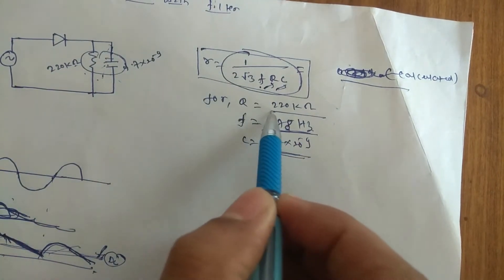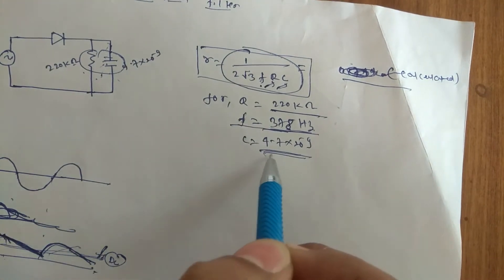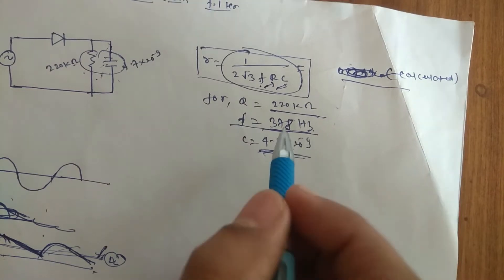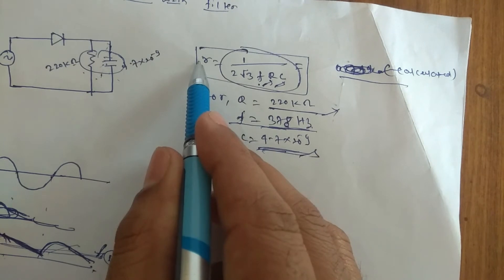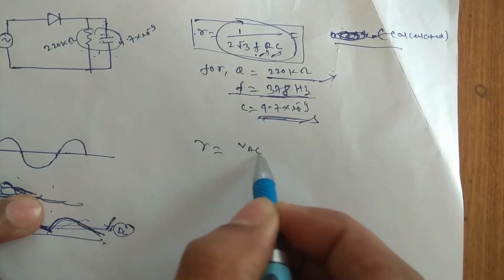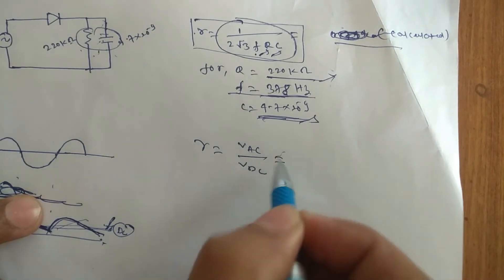We have taken 220 kilo ohm, and frequency we have set around 378 hertz, and a capacitor 4.7 nanofarad. Now we are going to check all this by multimeter, and then we are going to calculate ripple factor by VAC by VDC, that we will get it from DSO.